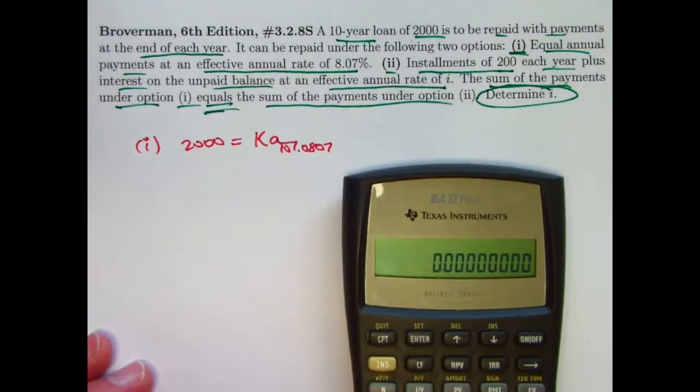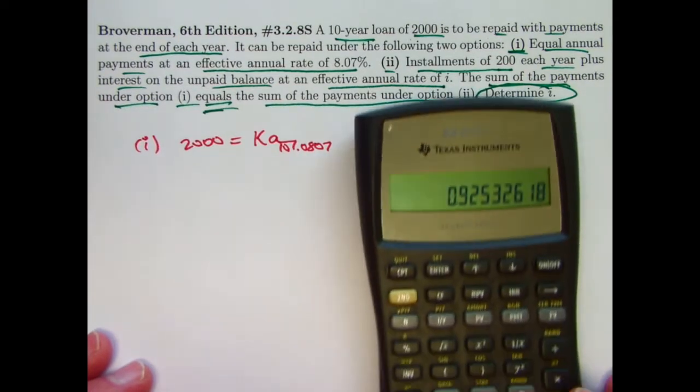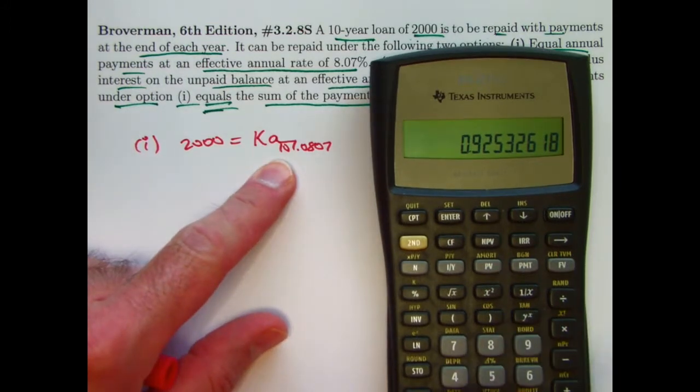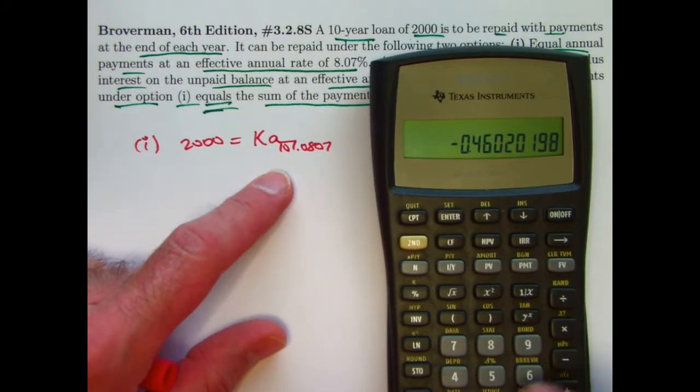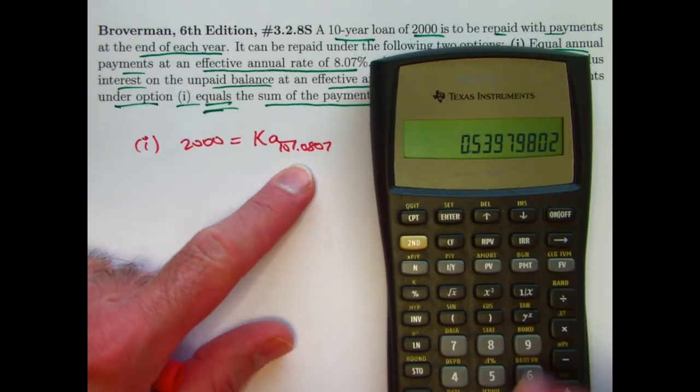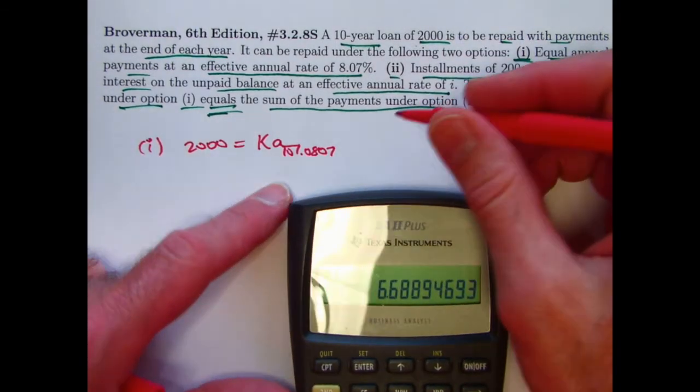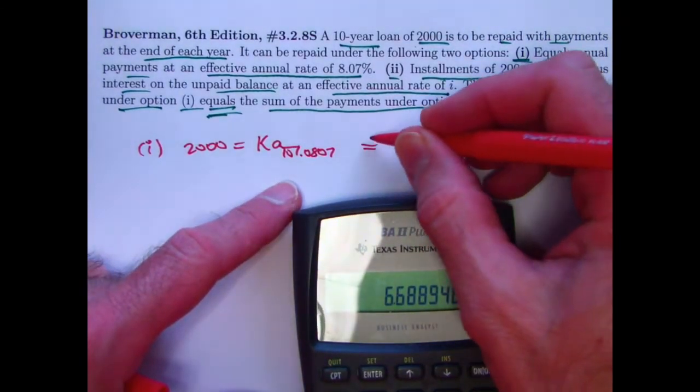Alright, so find A first. 1.0807 is 1 plus i. Take its reciprocal, that is v. I need to raise that to the 10th power. Subtract from 1, divide by 0.0807. There's the value of A. About 6.6889. I'm not going to bother writing it down.